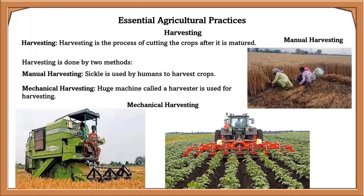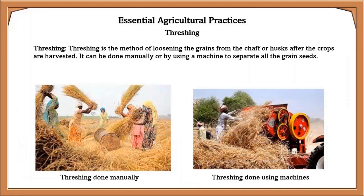Threshing is the method of loosening the grains from the shaft or husk after crops are harvested. It can be done manually or by machine to separate all the grain seeds.